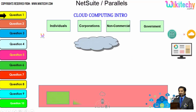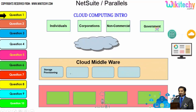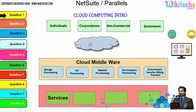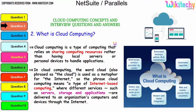There are different types of users — individuals, corporations, non-commercial people, and government. From any of these users, they are able to access services, storage, network, or operating system via the cloud. The middle layer consists of specialized software provided by the cloud service provider to access resources for end users. This is how the cloud computing architecture works.